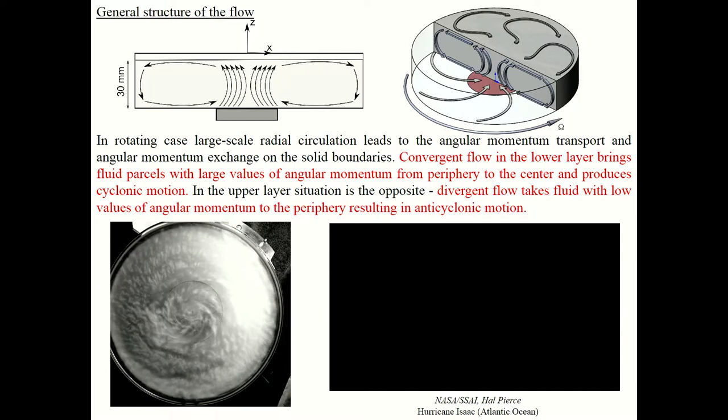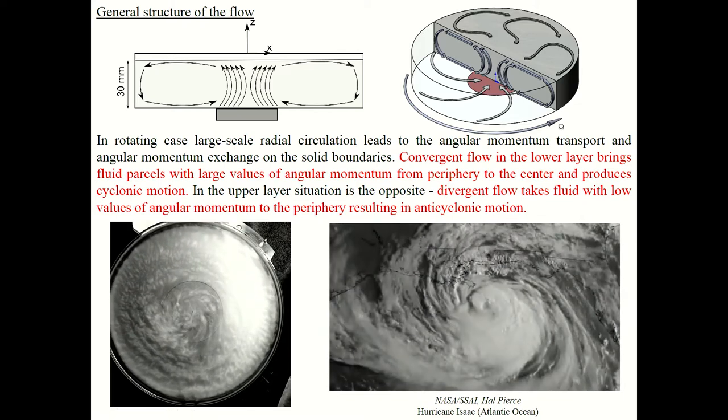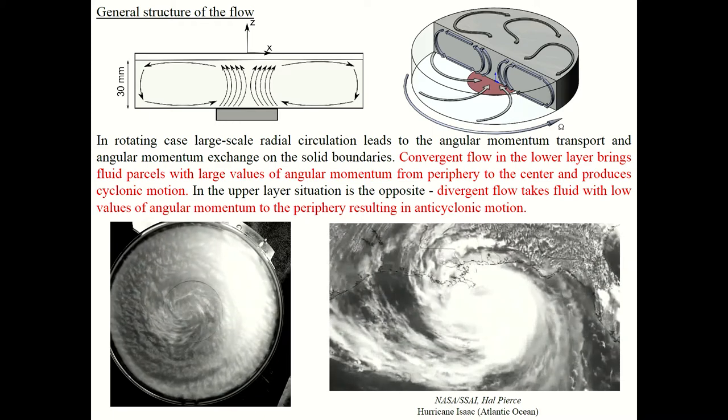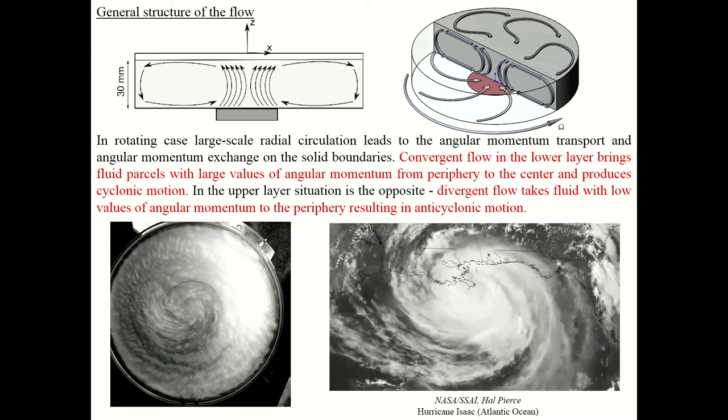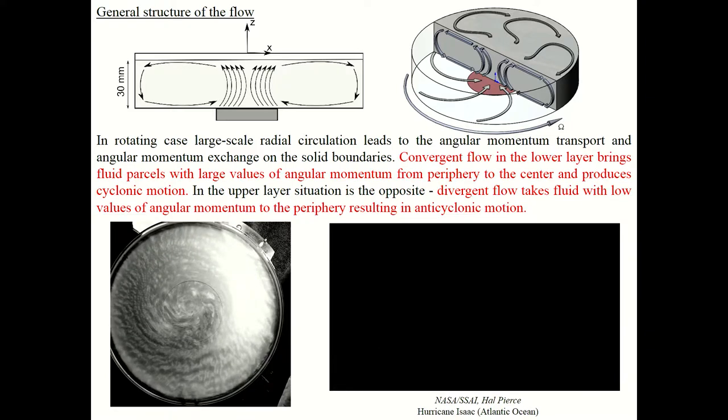The heating in the central area initiates intensive upward motion. Warm fluid cools on the upper layer and goes to the periphery where cold fluid moves down. After some time, the large-scale advective flow occupies the whole vessel. In the presence of rotation, the large-scale radial flow leads to transport of angular momentum. Convergent flow takes fluid with large angular momentum from the periphery to the center and produces cyclonic motion, while divergent flow takes fluid with low angular momentum from center to periphery, resulting in anti-cyclonic motion.